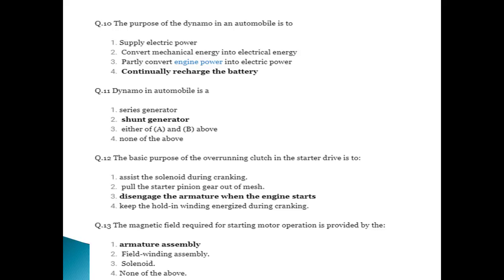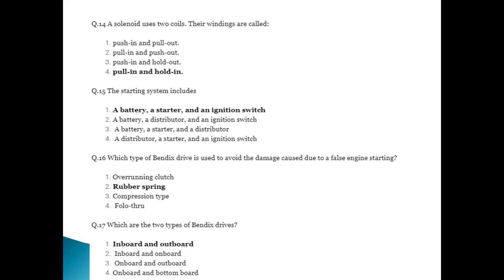The basic purpose of the overrunning clutch in the starter drive is to disengage the armature assembly when the engine starts. The magnetic field required for starting motor operation is provided by the armature assembly. The solenoid uses two coils — pull-in and hold-in windings.